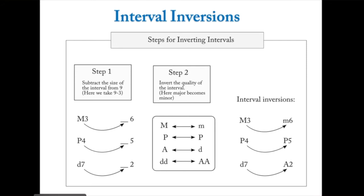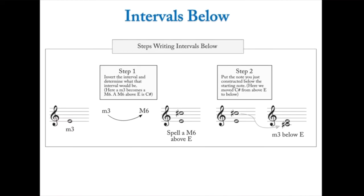To find the inversion of any interval: first, subtract the size from nine to get the new size. A major third inverts to a minor sixth (3+6=9), a perfect fourth inverts to a perfect fifth (4+5=9), a diminished seventh inverts to an augmented second (7+2=9). Then flip the quality: major becomes minor, minor becomes major, perfect stays perfect, augmented becomes diminished, and diminished becomes augmented.